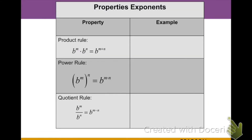The next rule is the product rule: when multiplying two like bases, we add the exponents. For example, a squared times a cubed — a squared is two a's, a cubed is three more a's — so adding them all together gives us a to the fifth.